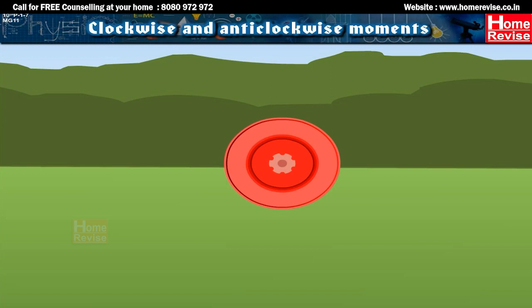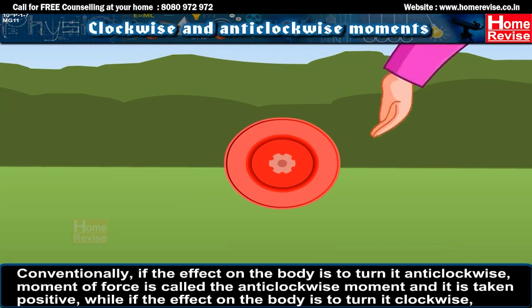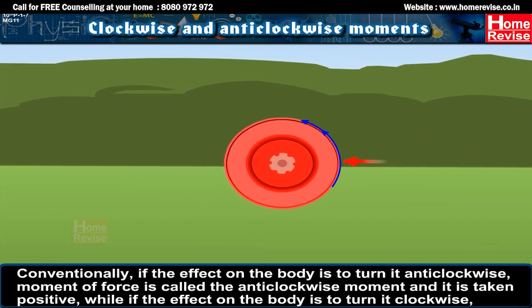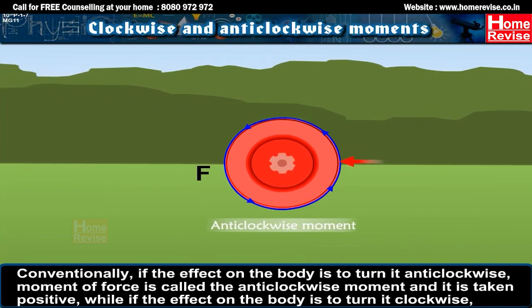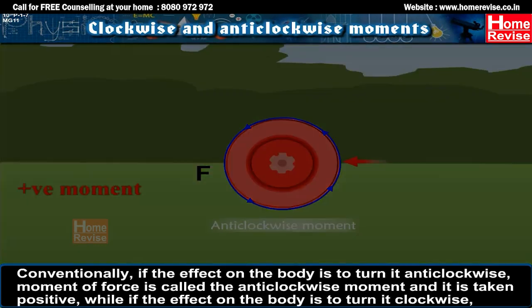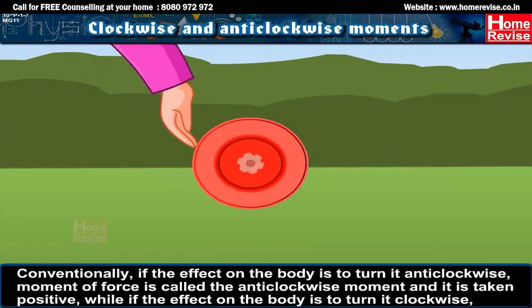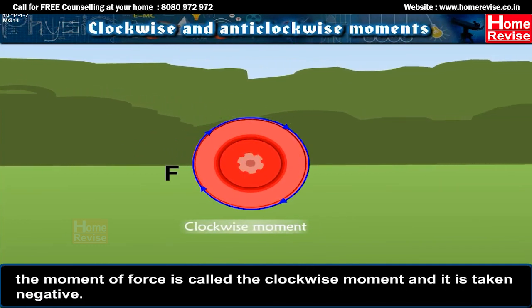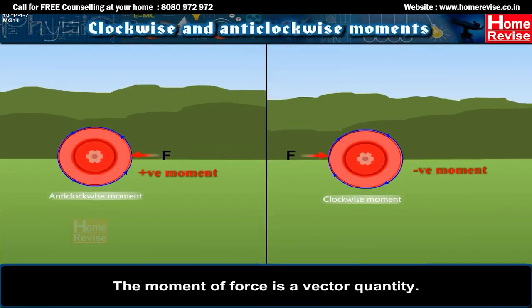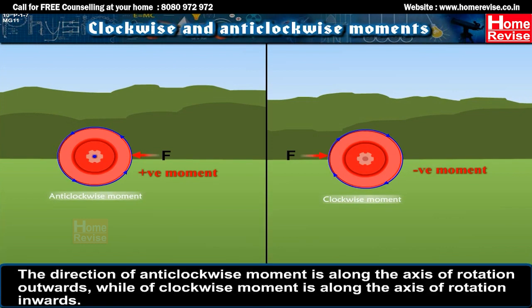Clockwise and anticlockwise moments: Conventionally, if the effect on the body is to turn it anticlockwise, the moment of force is called the anticlockwise moment, and it is taken as positive. While if the effect on the body is to turn it clockwise, the moment of force is called the clockwise moment, and it is taken as negative. The moment of force is a vector quantity. The direction of the anticlockwise moment is along the axis of rotation outwards, while that of the clockwise moment is along the axis of rotation inwards.